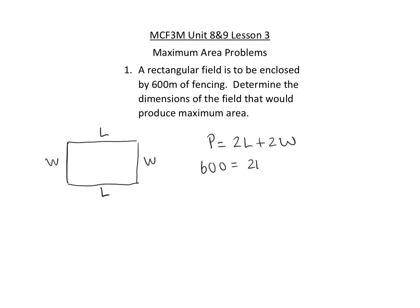I can see that all of these numbers could be divided by 2, so let's reduce it to 300 equals length plus width. The question is asking to maximize area, so the area of a rectangular field would be length times width.